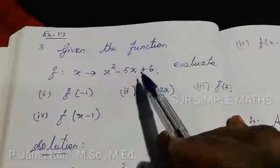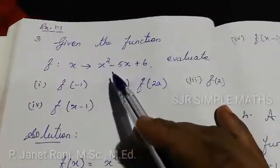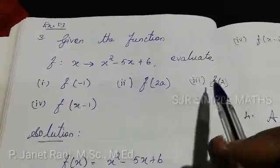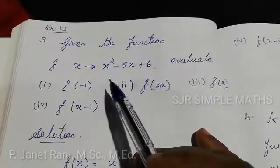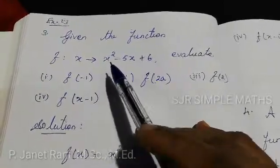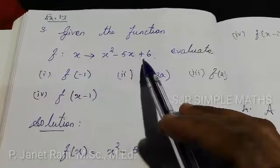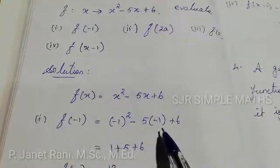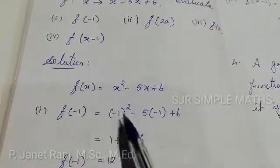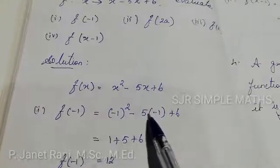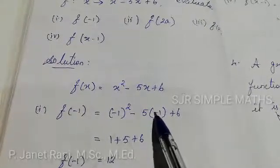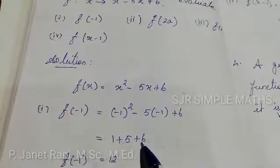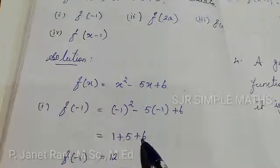Third sum. Given the function f(x) = x² - 5x + 6, evaluate f(-1), f(2a), f(2), f(x-1). For f(-1): substitute x = -1. f(-1) = (-1)² - 5(-1) + 6 = 1 + 5 + 6 = 12.